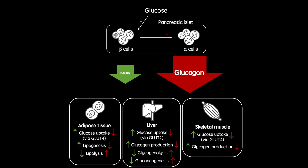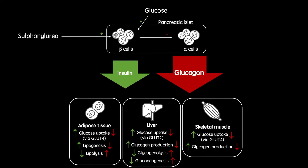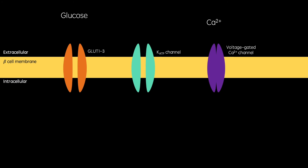One family of drug that is used to treat this condition is the sulfonylureas, which act to increase insulin secretion from beta cells. First, I'm going to show you the normal process of glucose-dependent insulin secretion, and then how sulfonylureas enhance this.